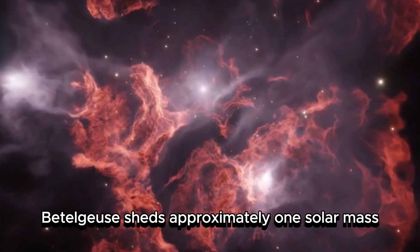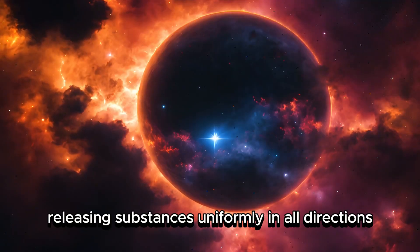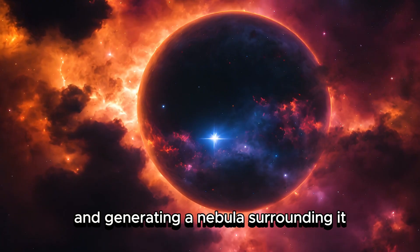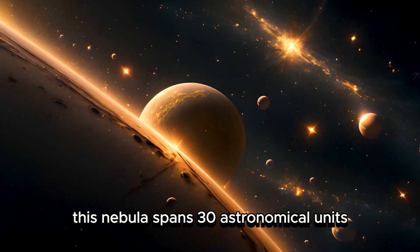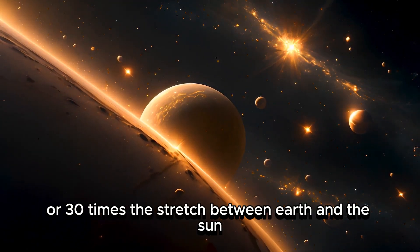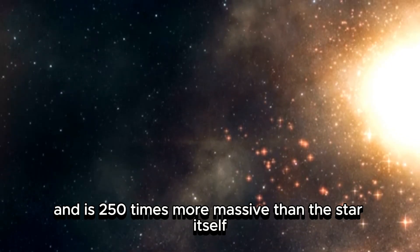Betelgeuse sheds approximately one solar mass every 10,000 years, releasing substances uniformly in all directions and generating a nebula surrounding it. This nebula spans 30 astronomical units, or 30 times the stretch between Earth and the Sun, and is 250 times more massive than the star itself.